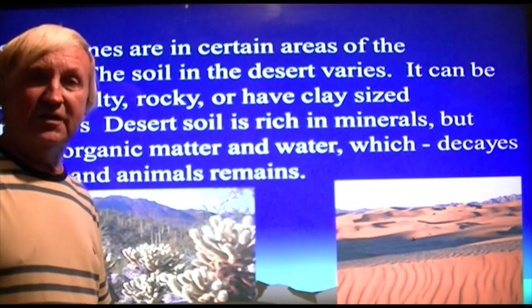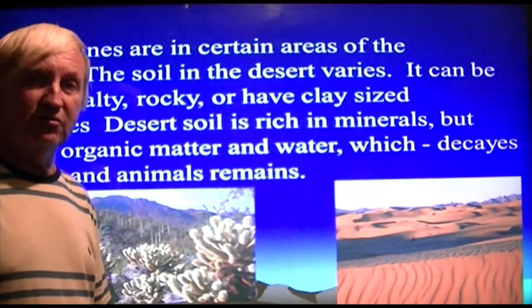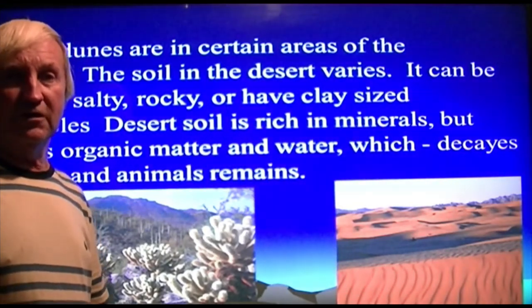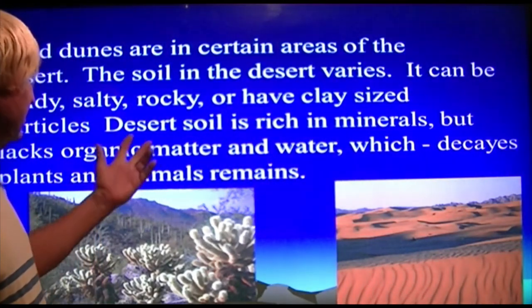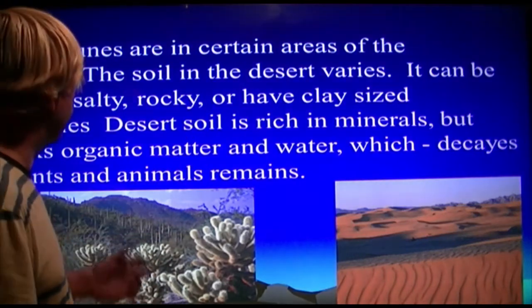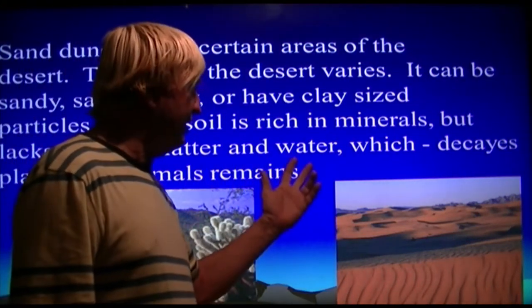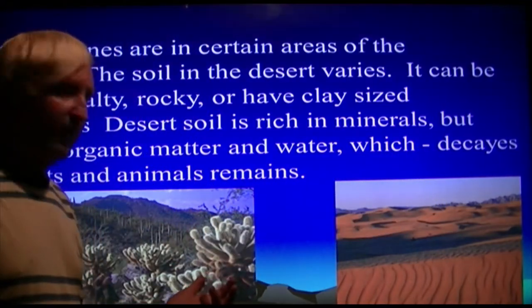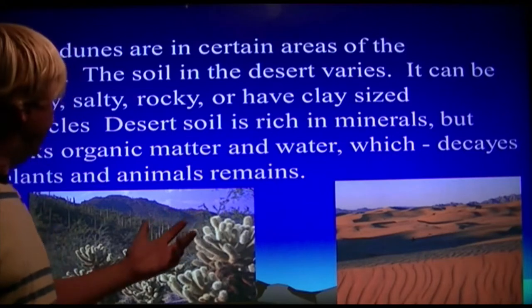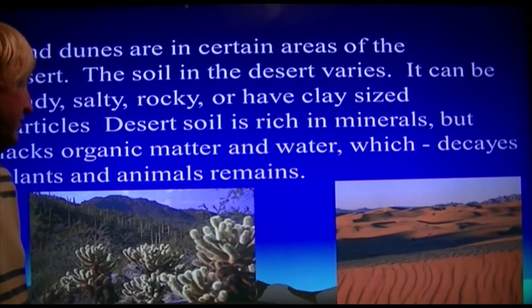The Chihuahuan Desert is very south in New Mexico — by definition a true desert occurring at 30 degrees north latitude. These desert soils are rich in minerals but lack organic material and water. You really need water to decay plant and animal remains in order to develop good soil.